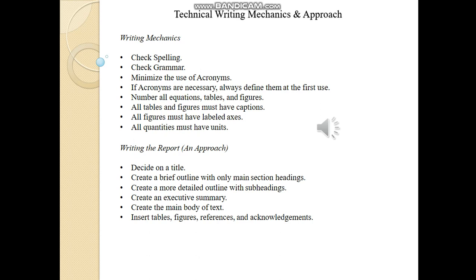The last mechanic to keep in mind is that all quantities must have units. You cannot write 18, 20, or 205 in your technical report without labeling them with units. For example, if you are writing 10, it could be volts, amperes, or watts — so all quantities must have units. This makes the reader's job easy, and if you are writing a journal paper, dissertation, thesis, or report, the reader gives positive feedback because of the writing mechanics you have followed.